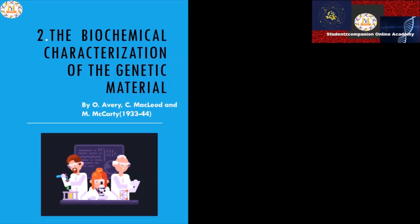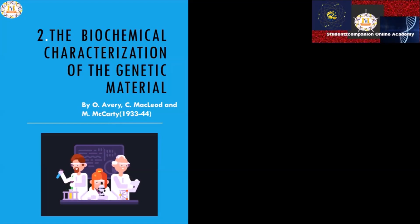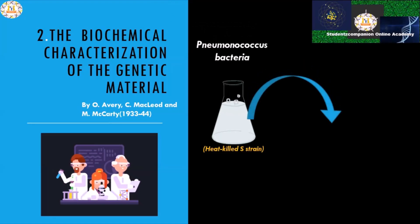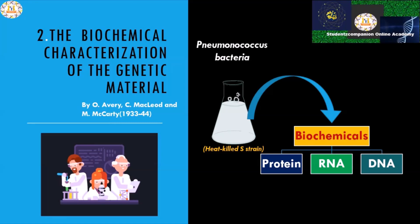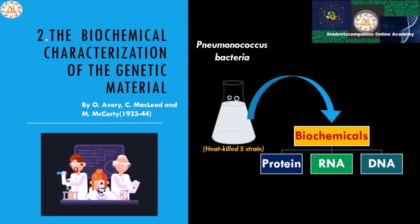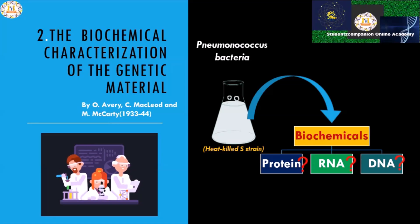In this session we're going to discuss the characterization experiment by Avery, MacLeod, and McCarty, 1933 to 1944. What they did is they isolated the biochemicals — protein, DNA, and RNA — from the Pneumococcus bacteria, which was the heat-killed S strain. For the characterization experiment, they tried to figure out what was the nature of the genetic material: is it the protein, RNA, or DNA?